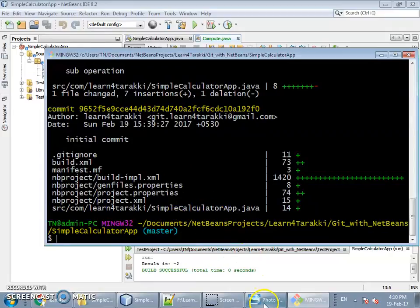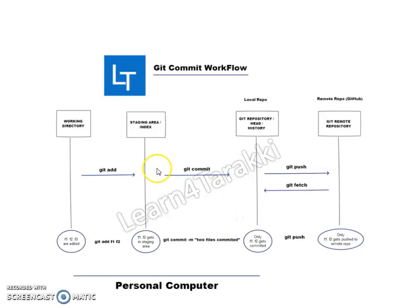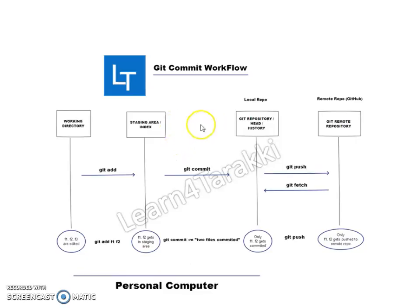Now let's see how git differs from SVN. In git we have to issue two commands to accomplish what SVN does in one command. First we modify the file, then we issue git add to put the file into the staging area, and then we issue git commit to move the staged files into the repository. If we also want to put the file in the public repository, we need to use the push command.